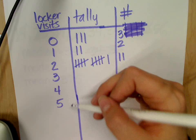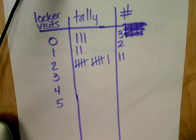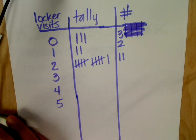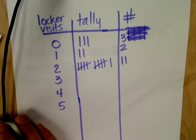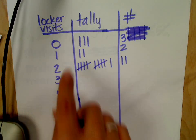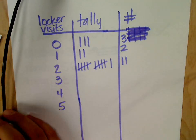So then you keep going for three, four, five. What happens if they don't visit their locker seven times? You put nothing - it would be empty. Can you just skip the ones that aren't on here? No, you want to include them. That way it's also like being able to see a gap.